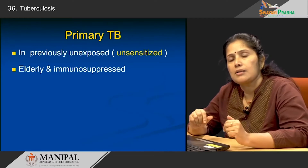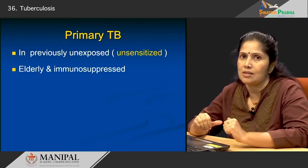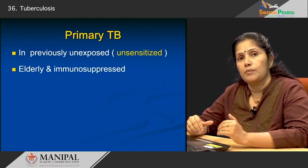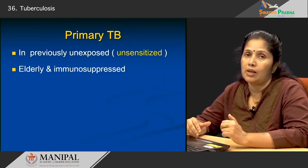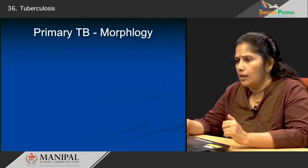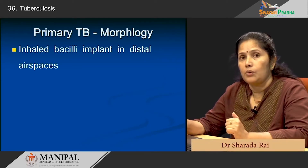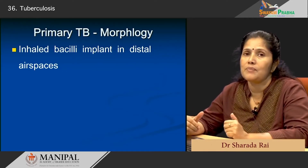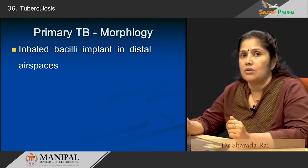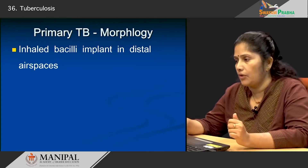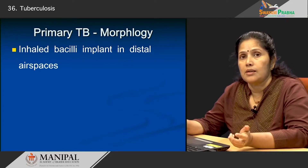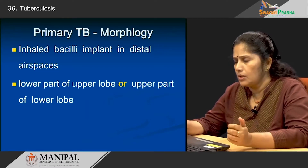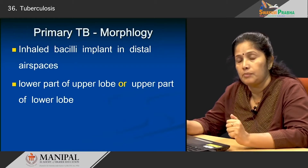Primary tuberculosis occurs in patients who have not been sensitized to this disease — that is, previously unexposed patients. The elderly and immunocompromised patients are also prone to developing primary tuberculosis. The disease reaches the lung mainly via droplet infection: the bacilli is inhaled and reaches the distal airways. Primary tuberculosis occurs in the lower part of the upper lobe or the upper part of the lower lobe — a very important area of involvement.